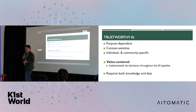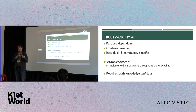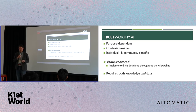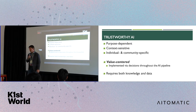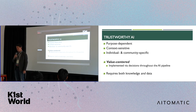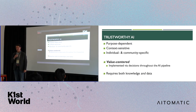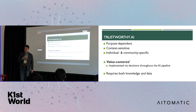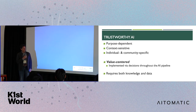Trustworthy AI is an important goal. It is not a fuzzy or vague goal — it is one that is easily realizable. And it's one that is going to require both knowledge and data. Knowledge is an important first step, but data is also critical when we want to move forward with trustworthy AI. That's the sales pitch: this is something that everyone can do.